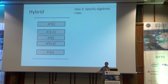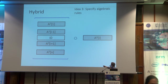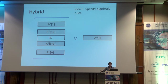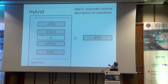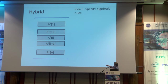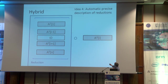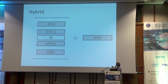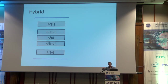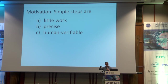Then we define some algebraic rules. For example, for the hybrid argument, you can plug in an identity, and this is still the same package, and now you can do a hybrid proof in a very simple way. This becomes a reduction to a simple assumption. You want to swap out a package from 0 to 1: you do this by moving the package here — this is the reduction — then reduce to this single-session assumption, and move it back. This is automatic; one doesn't need to do anything for it. These simple steps are little work, precise, and human-verifiable.